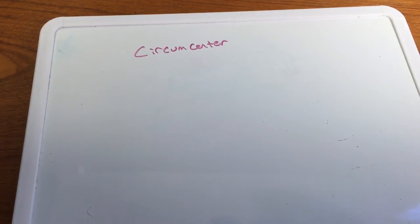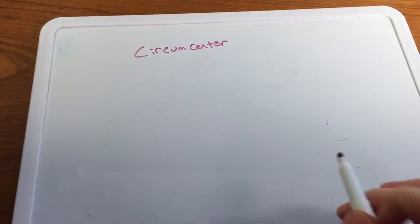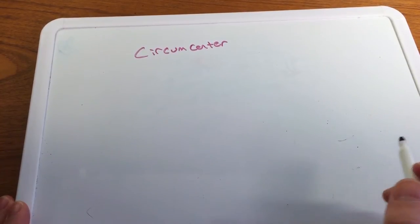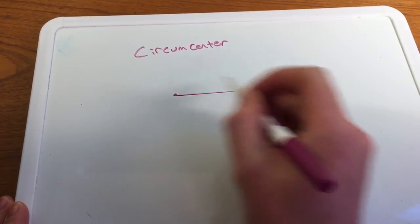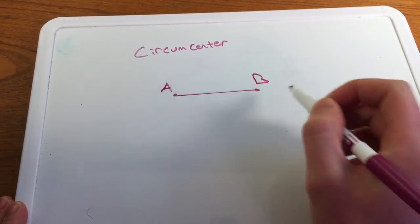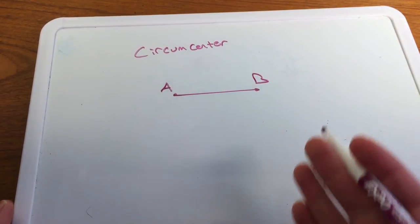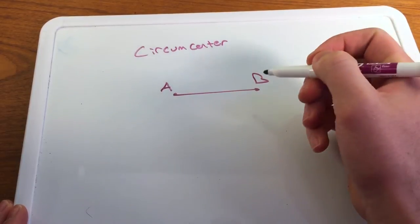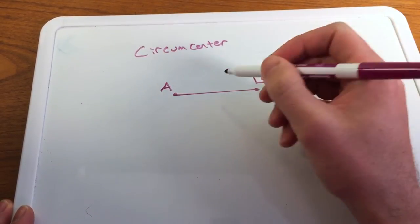The circumcenter of a triangle is the point of concurrency of the three perpendicular bisectors of a triangle. A perpendicular bisector is when we take a segment — call it A and B — where we have a perpendicular line, ray, segment, or plane that is perpendicular to the segment and also cuts it at its midpoint.